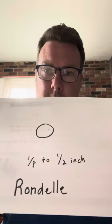Our next one is our rondelle cut. It's about one eighth to one half inch cut, and rondelle simply means it's our round cut. Then our last one is our chiffonade. Our chiffonade is about one millimeter thick, so it's very small — small, thin strands.